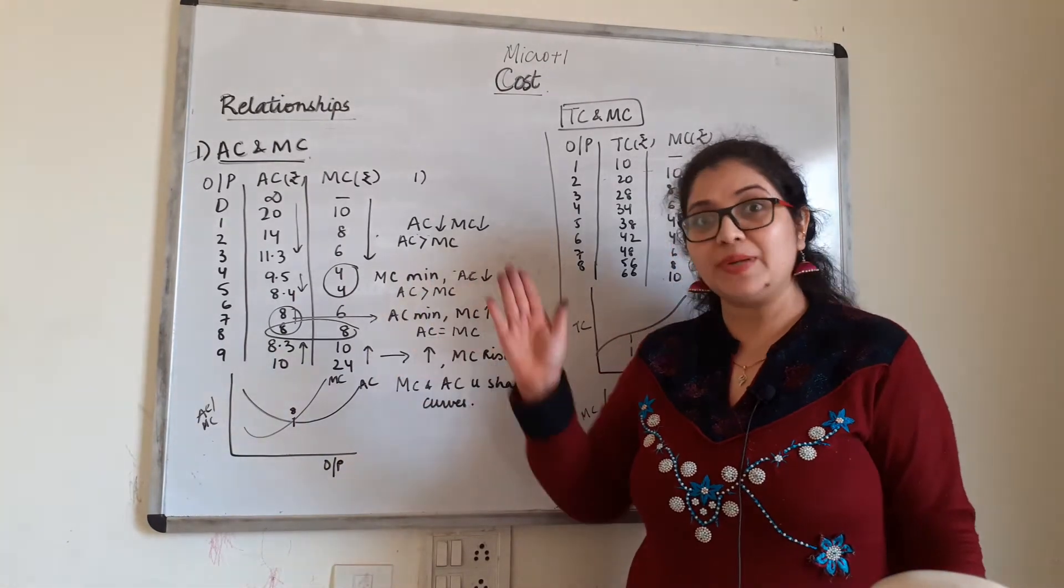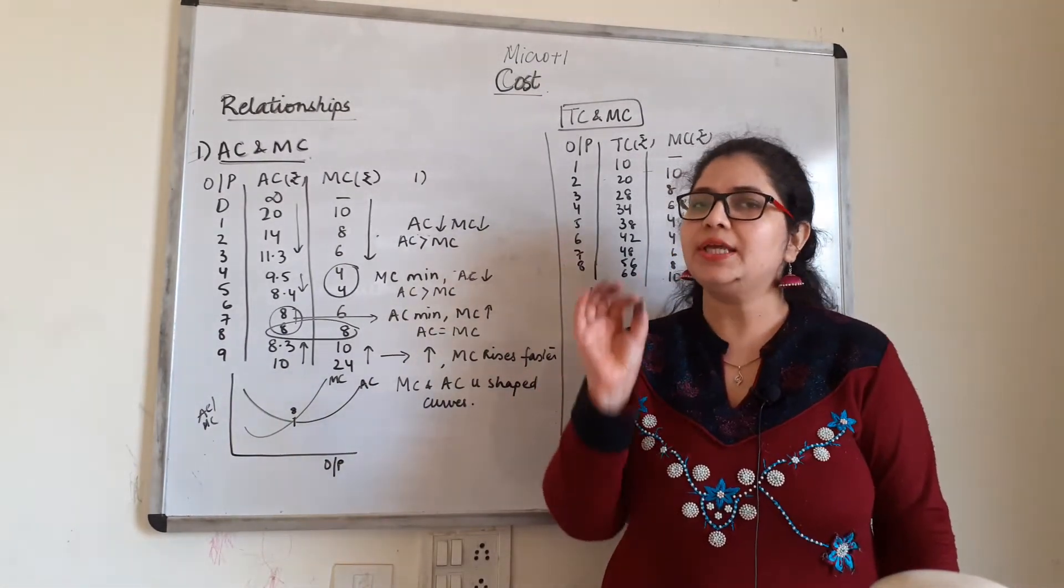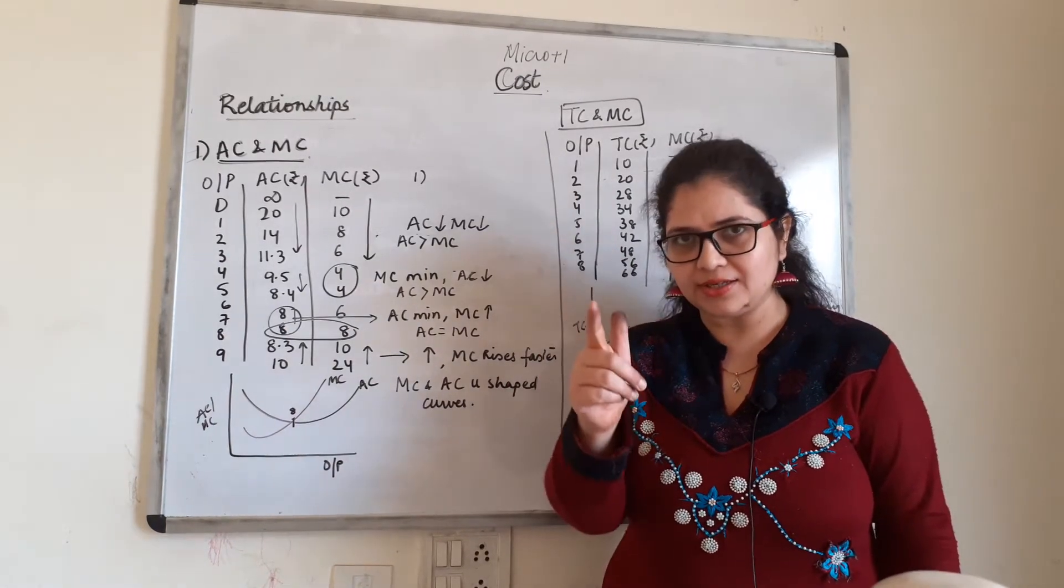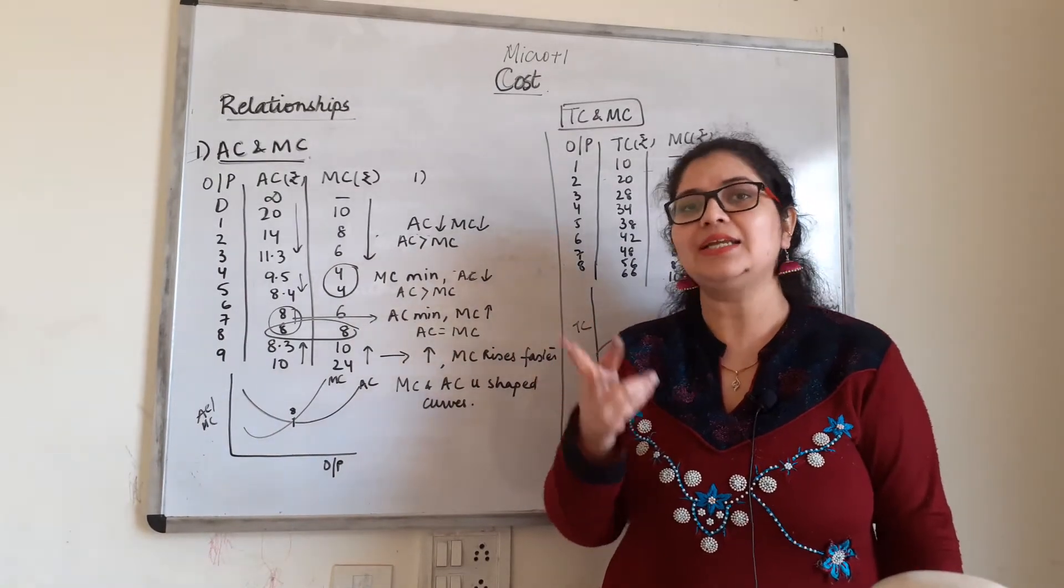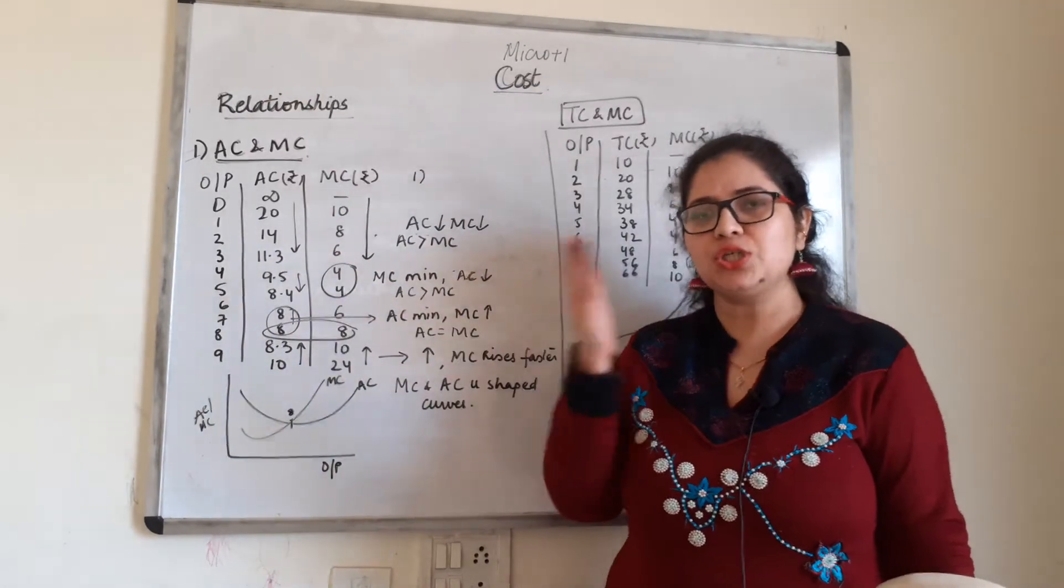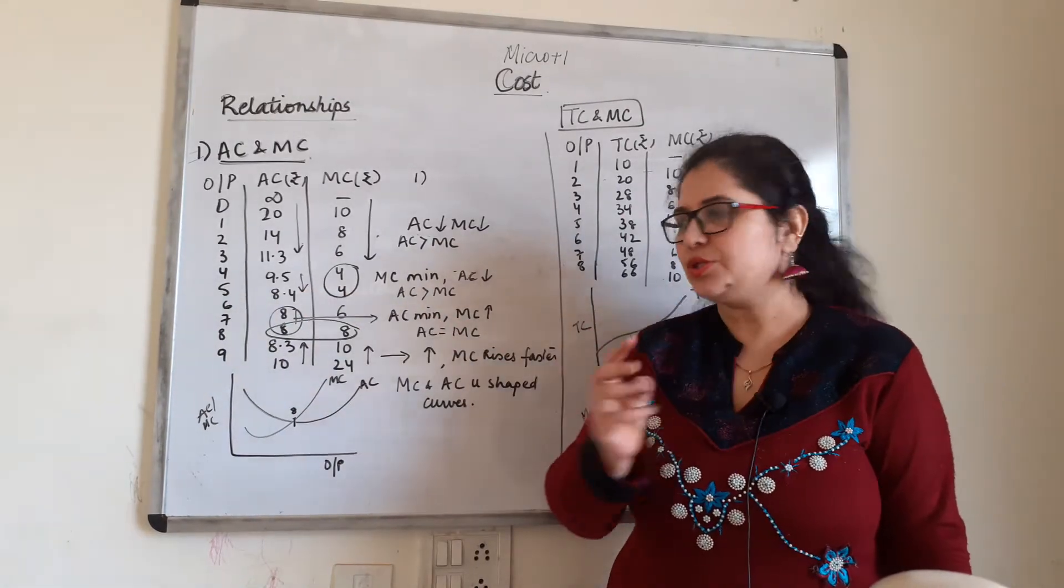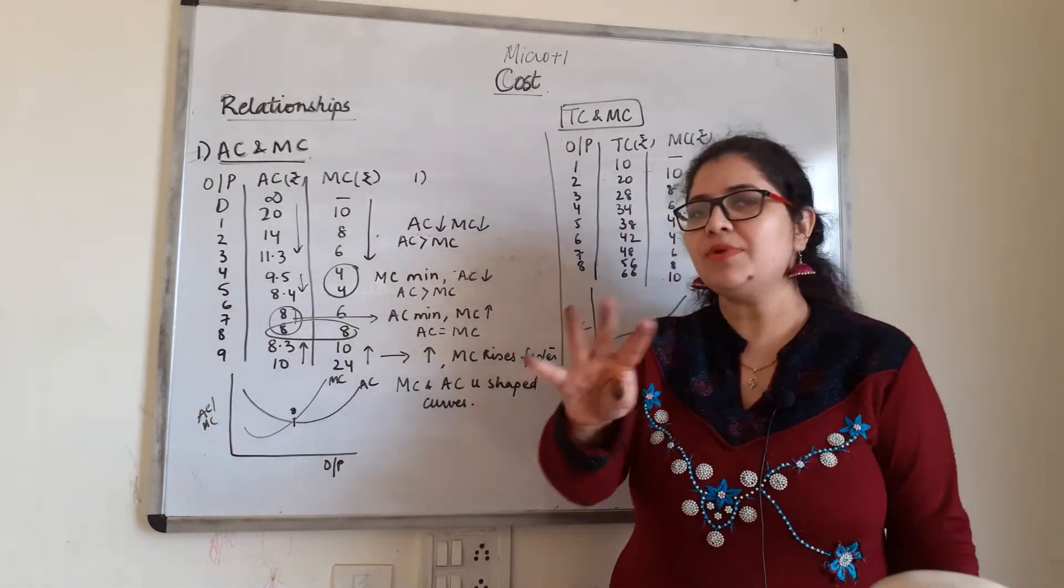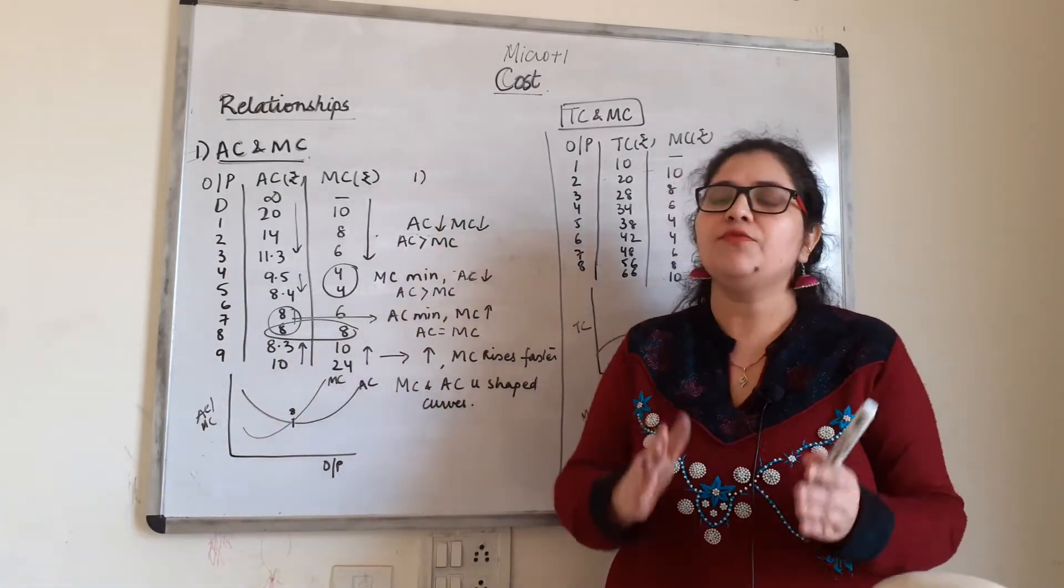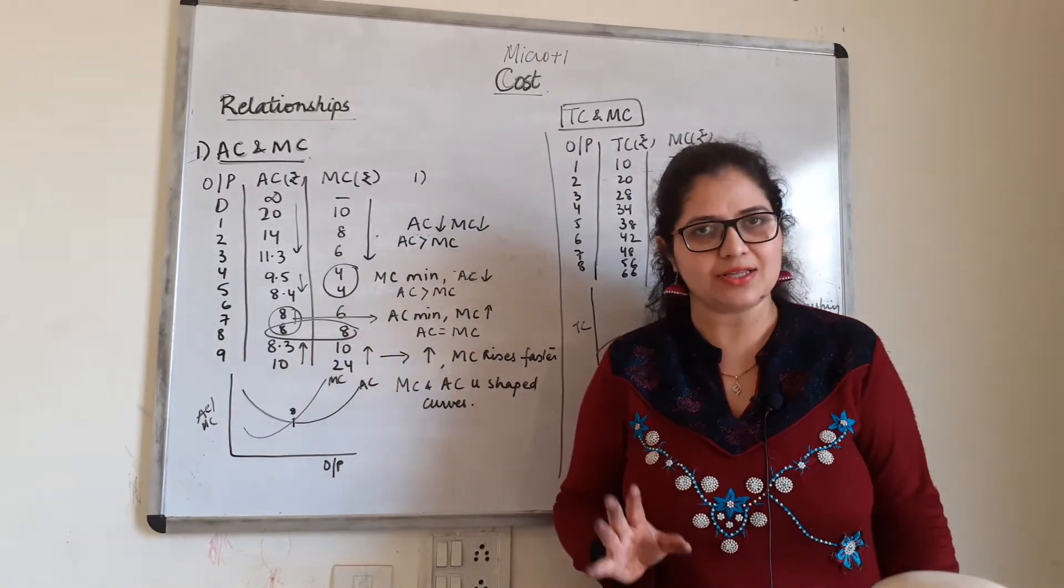This is the last video where we are doing relationships. I am going to repeat: relationship questions for 4 or 5 marks are important. There is a set pattern to attempt it. Step number 1: Define with formula those two parts of which the relationship has been asked. If you have asked AC and MC, then the definition of AC and MC with formula. Step number 2: Table. Step number 3: Diagram. Step number 4: The relationship. Like the table and diagram are showing, you write in words. That is how you get a full 4 or 5 marks. Clear?